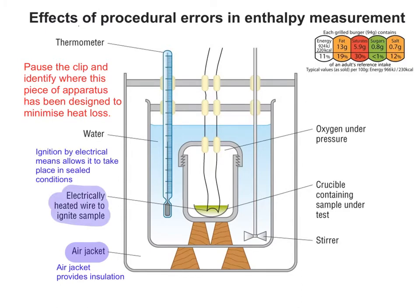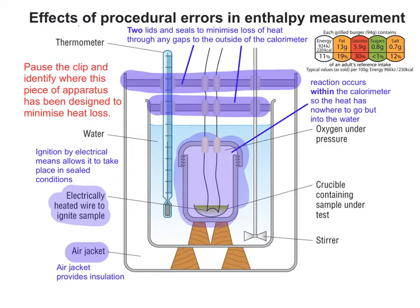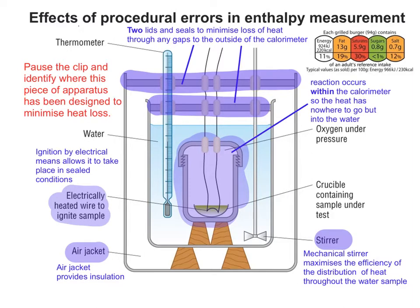The fact that it's electrically heated as opposed to heated by an external flame means that it takes place in sealed conditions. The reaction takes place within the calorimeter, so the heat has nowhere to go but into the water. There are two lids and seals to minimise loss of heat through any gaps to the outside, and finally a stirrer which maximises the efficiency of heat distribution throughout the water sample.